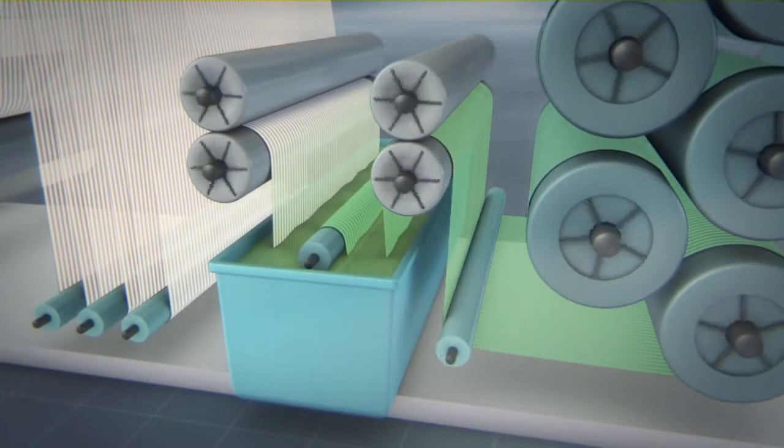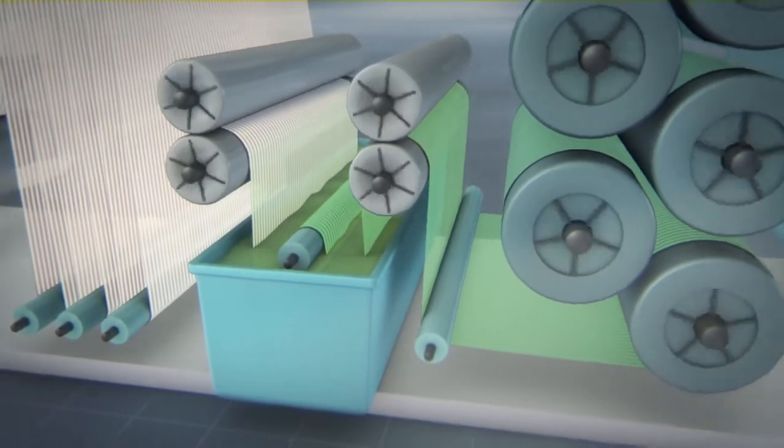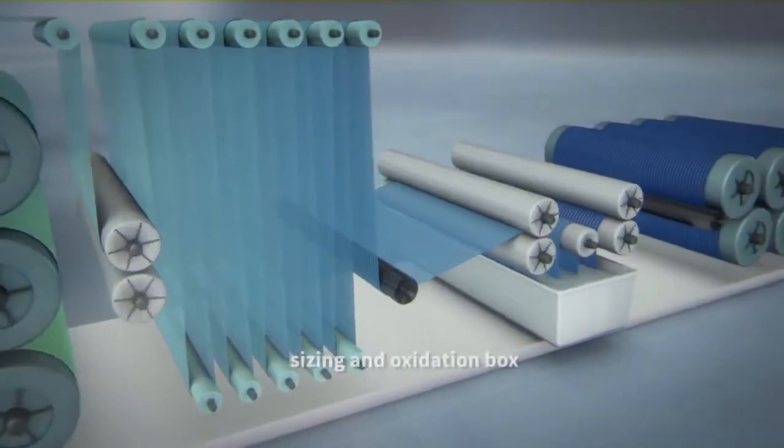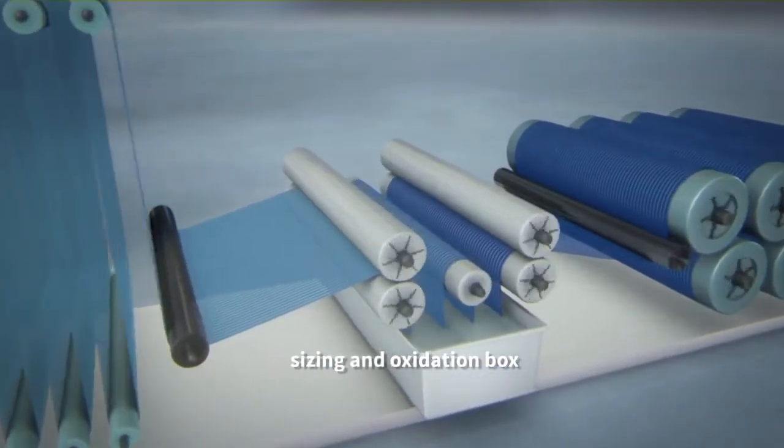The next step is a combined sizing and oxidation box, in which the dye is fixed and the protective starch layer is applied. All the other working steps are eliminated.